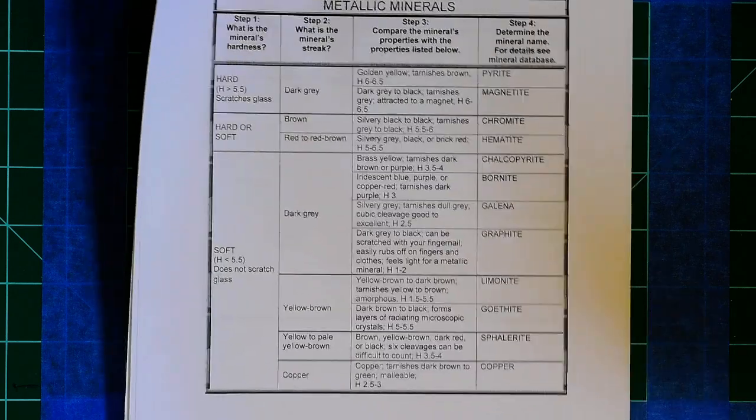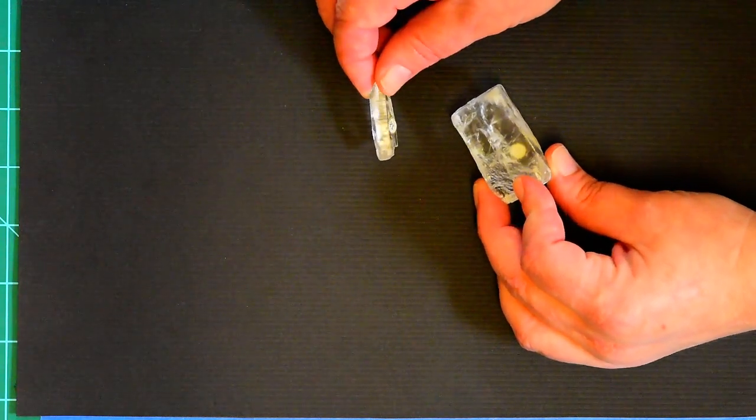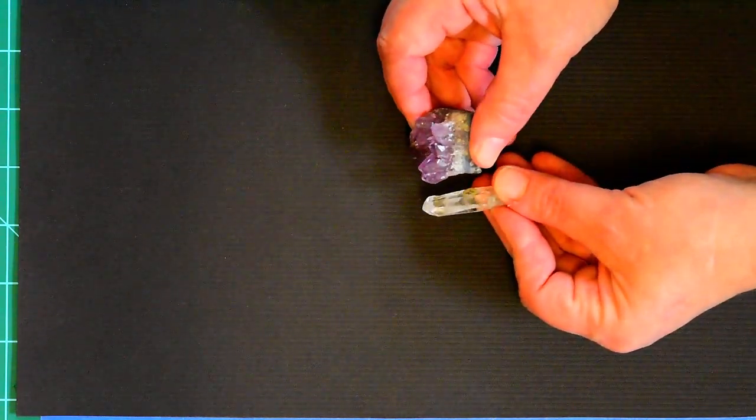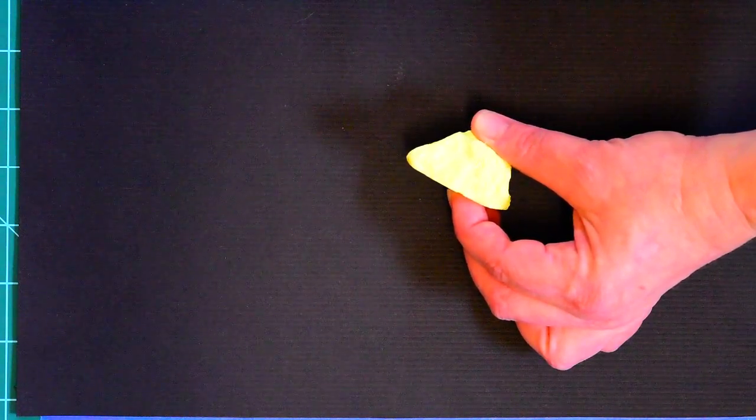Let's start by looking at color. Color is not a good way to identify minerals — two different minerals can be exactly the same color, or the same mineral can have different colors. Some special minerals like this bright yellow one are always a consistent color, but for the most part you do not want to identify minerals based on color.